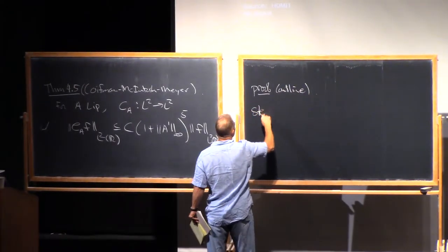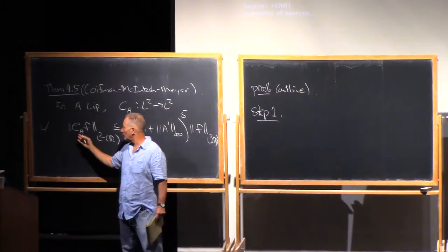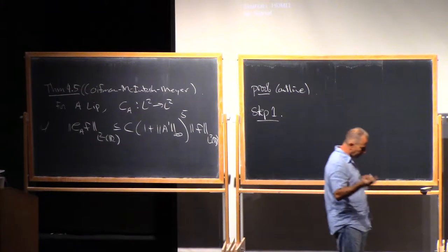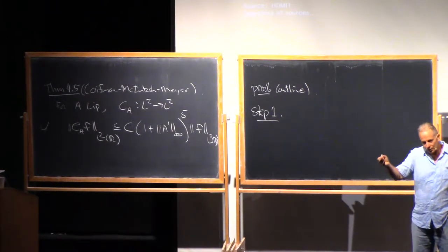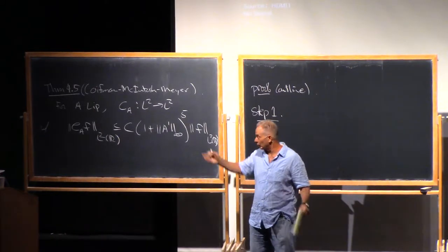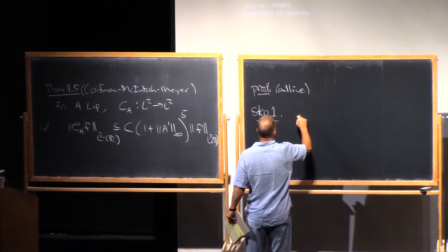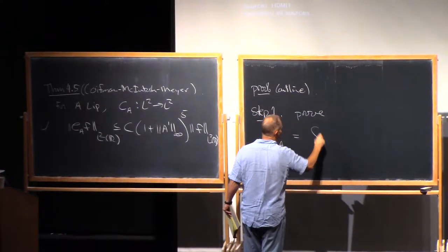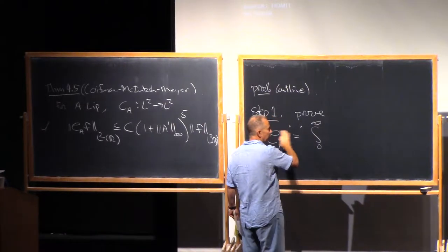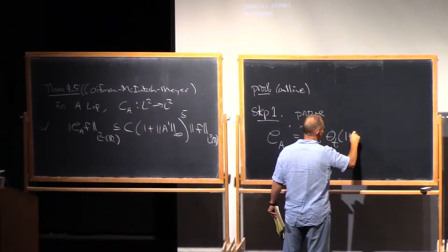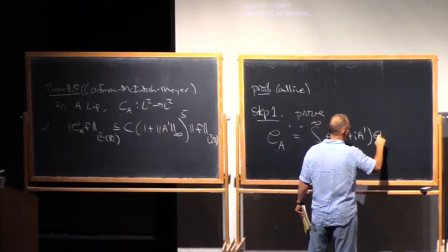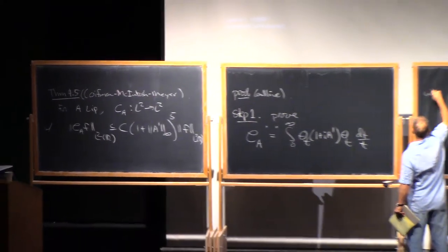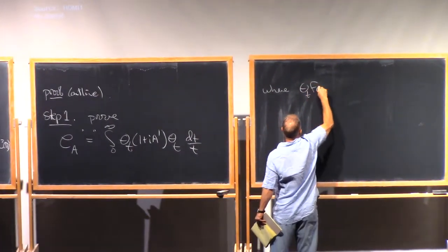So there are two steps. Step one is a resolution of this operator in a sort of Calderon reproducing formula. It really is a sort of Calderon reproducing formula, except that instead of reproducing the identity operator, it reproduces the Cauchy integral operator. So step one is to prove the following resolution of the Cauchy integral operator.